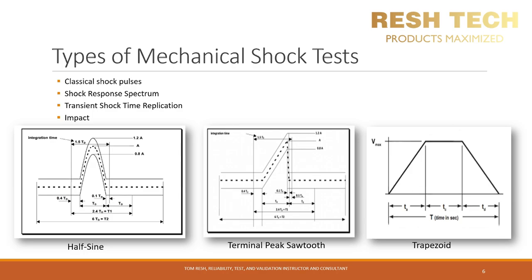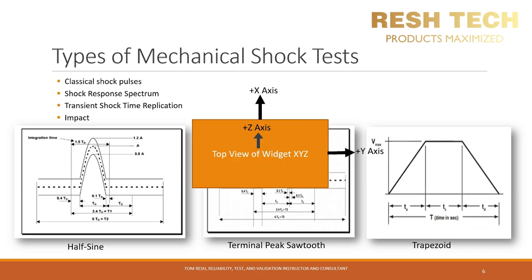What is meant by positive and negative directions? A system's axes and directions are defined with an axis definition. Here is an example with a defined x-axis, y-axis, and z-axis and their corresponding positive directions. The opposite of these directions would be the negative directions. These are determined as the normal operating orientation for the particular system.